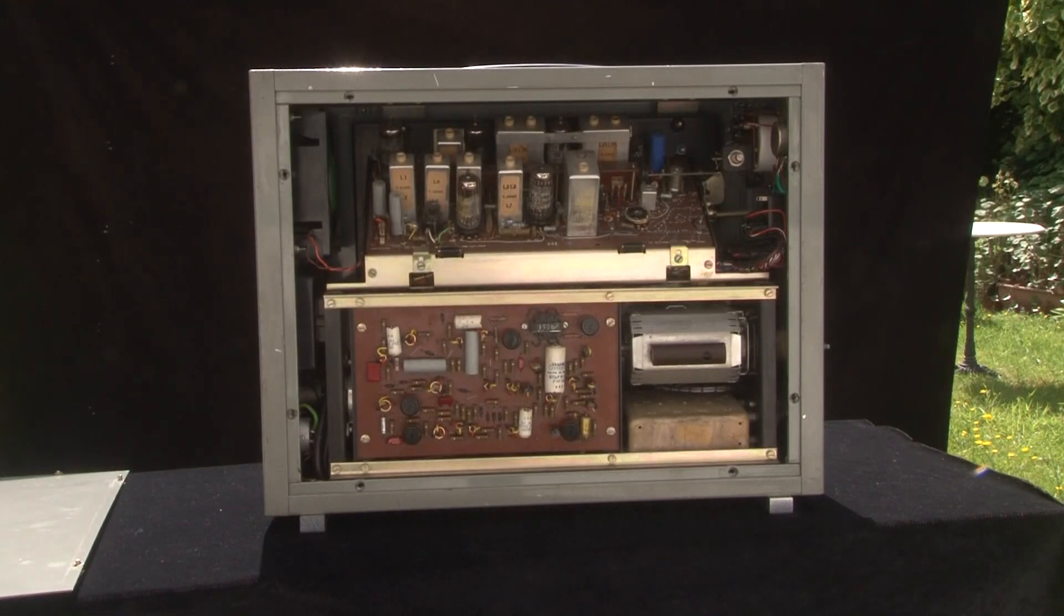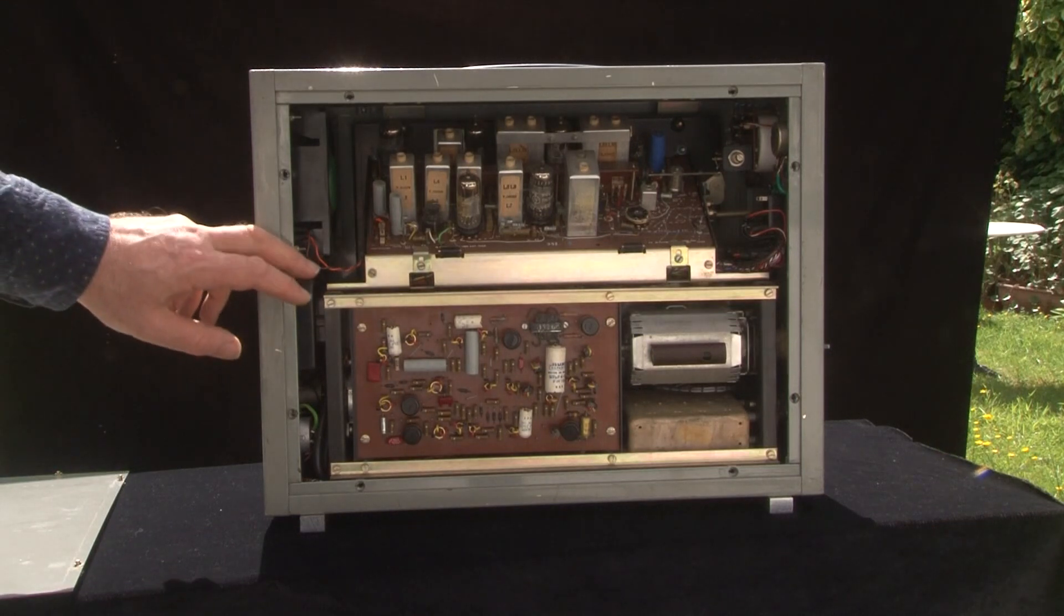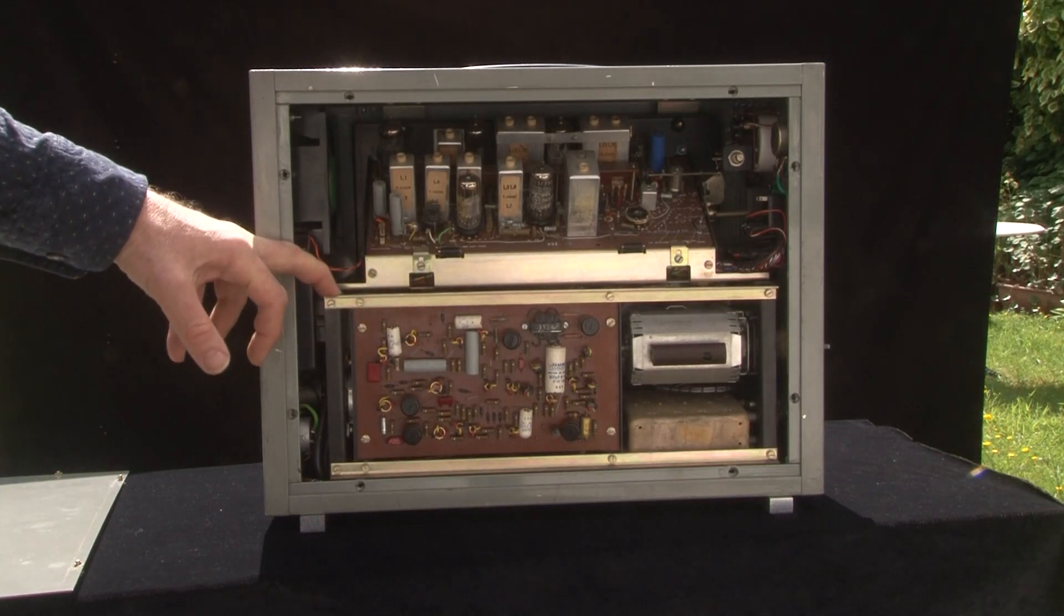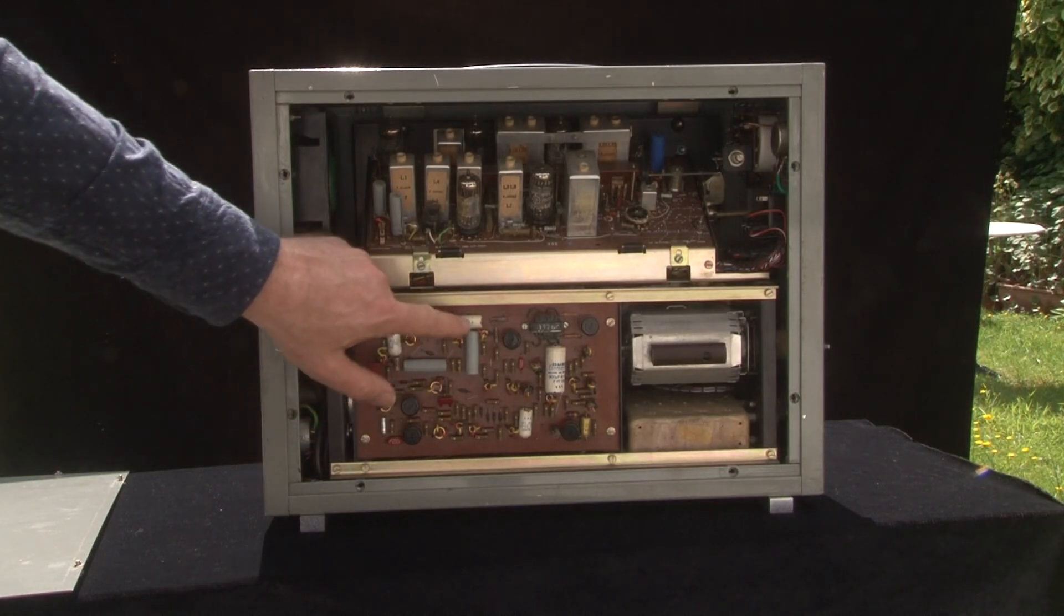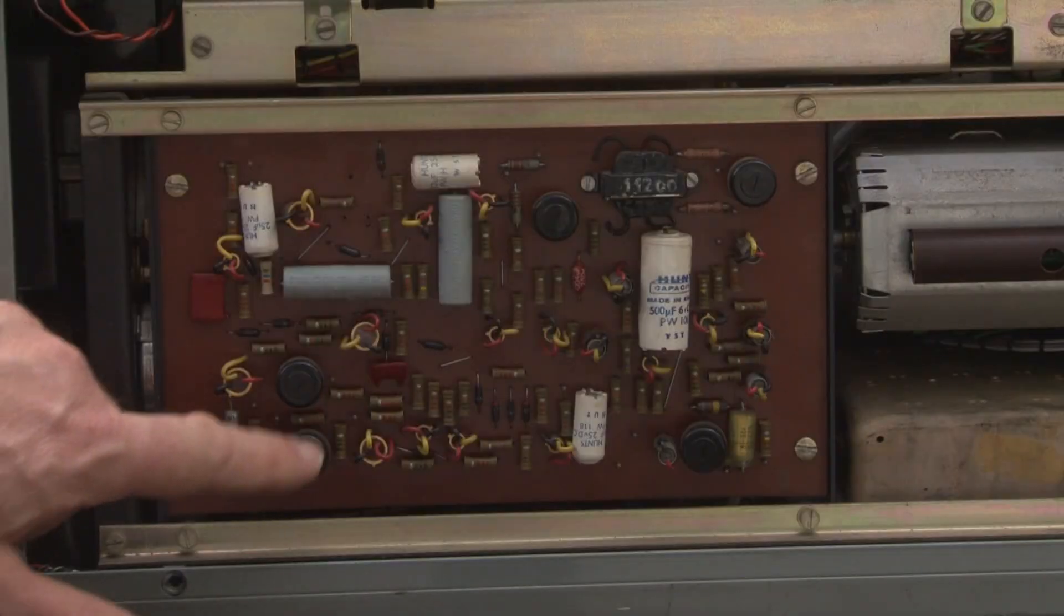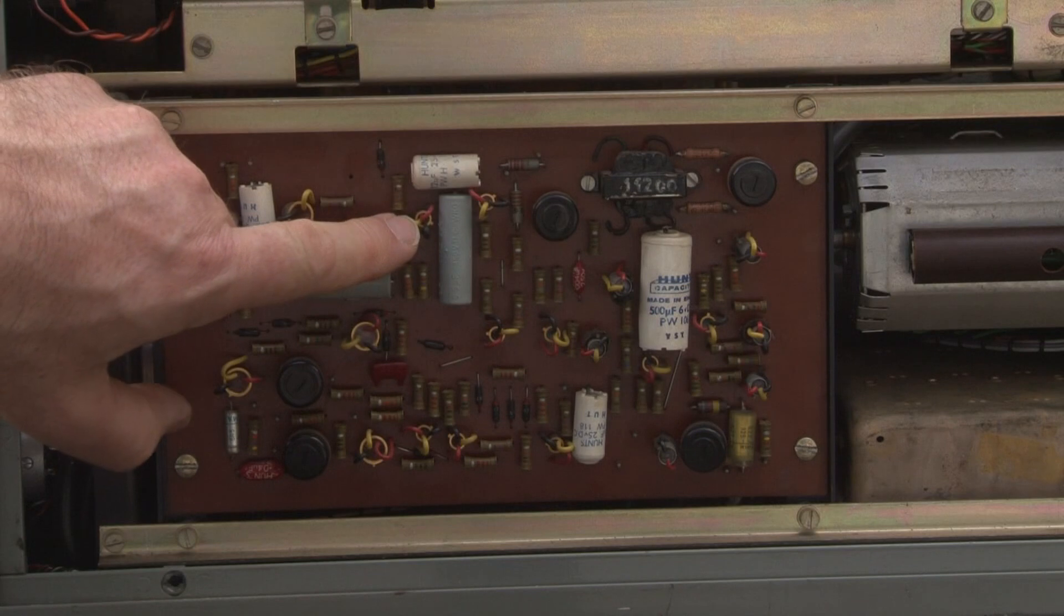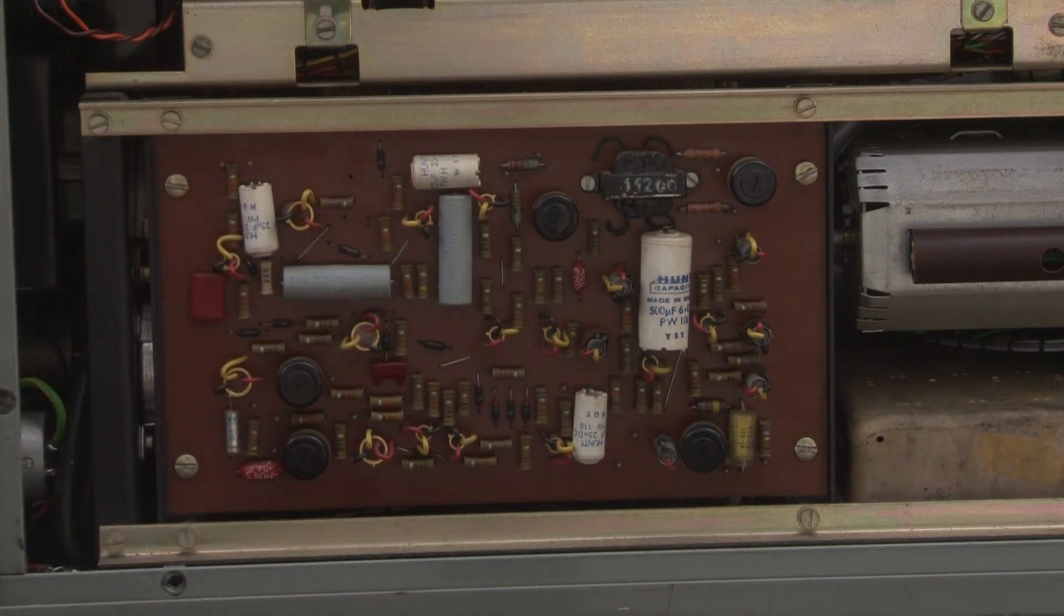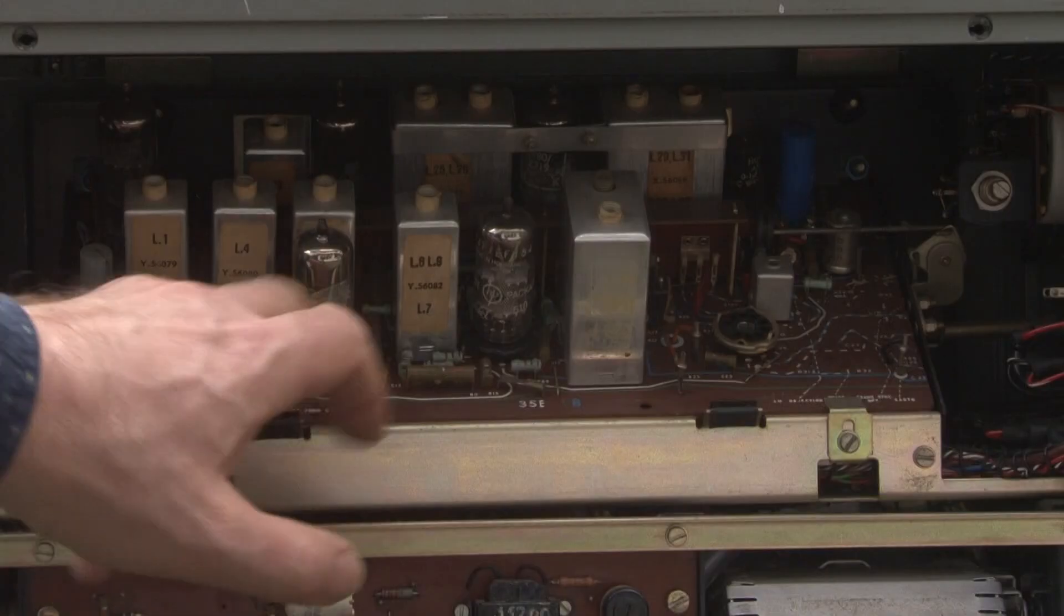Most of the receiver is accessible from the left-hand side panel. And immediately, we see an interesting hybrid set of electronics here. We've got transistor board down here with the transistors mounted upside down with their legs passing through the circuit board. Whereas up here, we've got a valve-based circuit board.